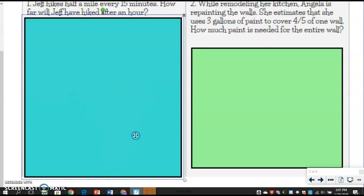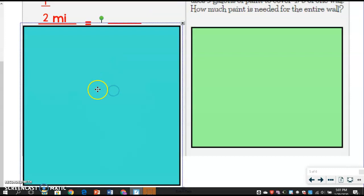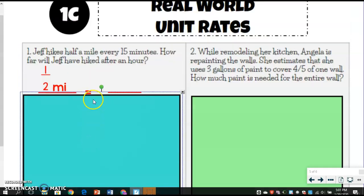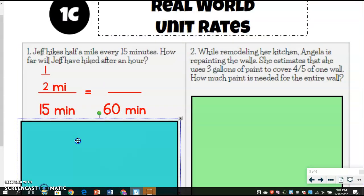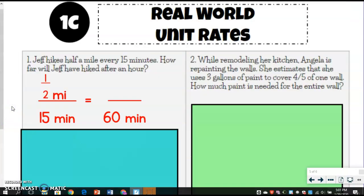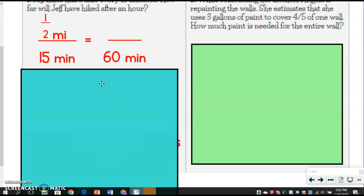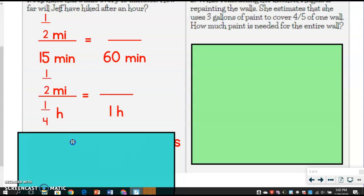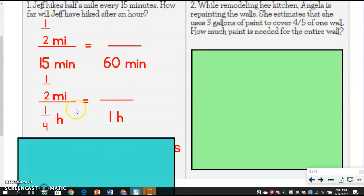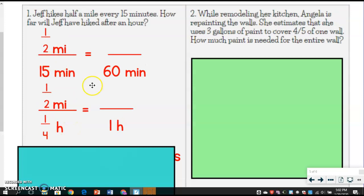You can leave it as minutes if you want, because we can go from 15 minutes up to 60 minutes, which would be the same as an hour. You can do that if you want. However, if you want to think of it as hours, you're going to have to change your 15 minutes to what an hour would look like, which would be one-fourth of an hour. So either one of these is fine, whichever one you choose.